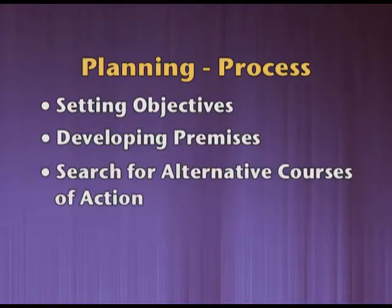At the third step, we have the search for alternative courses of action. Once the objective is set — say, profit of 30% compared to 20% last year — we look for alternatives. For example: we may increase the price of the existing product; we can import machines that produce goods quickly; or we can use waste resources in the manufacturing of stuffed toys. These are possible alternatives for achieving 30% profit.